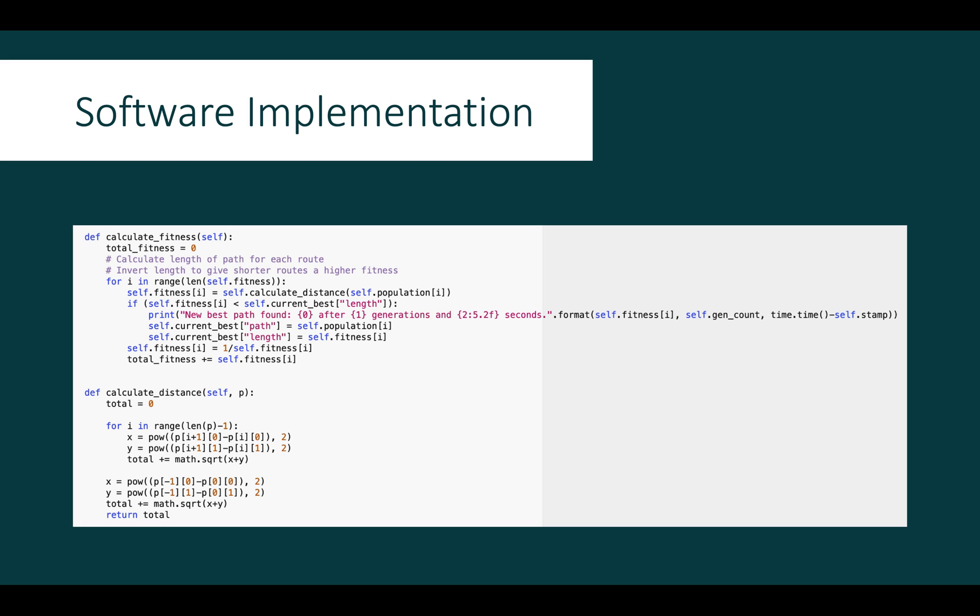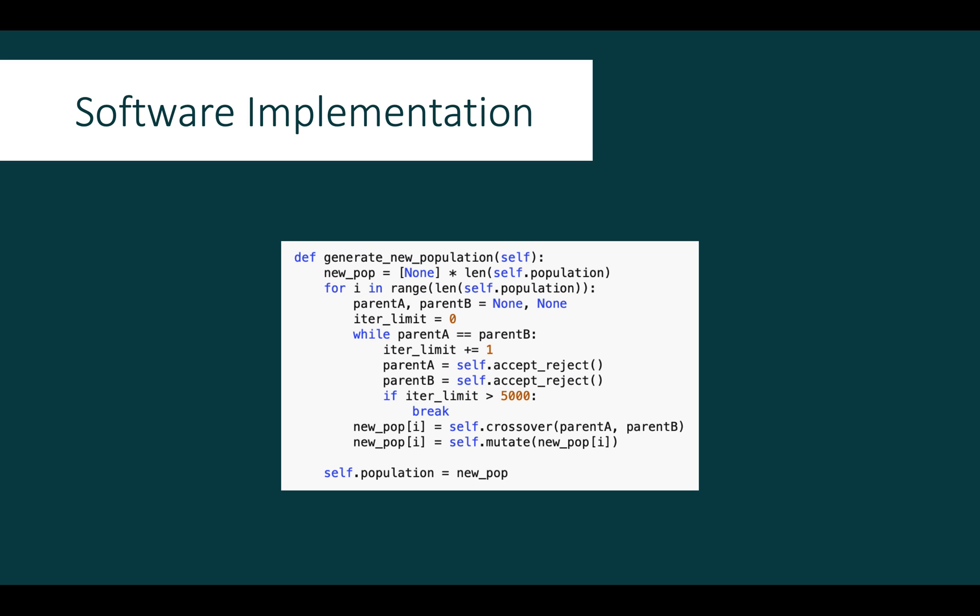Following the calculation of fitness values, the new population is generated. The new population is set to an empty list of the same length as the current population. Two parents are found by calling the accept-reject function and the guard is in place to minimise the chance of the parent elements being identical. Once the parents have been selected, the crossover function is called to generate the new child element from the parents and the child is then mutated. Once these steps have been performed on all new child elements, the new population list is stored as the current population list.